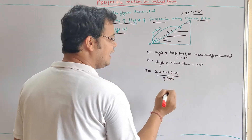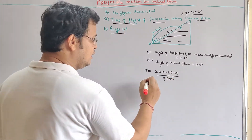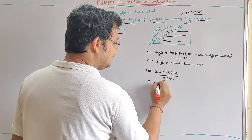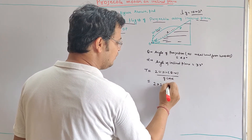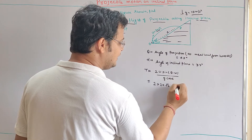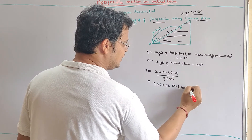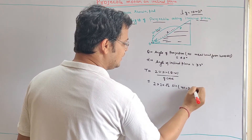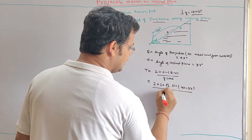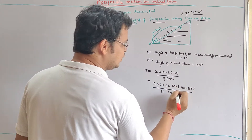This is the time of flight. So, time of flight is equal to this value. Here u is 20 root 2, the angle of projection is 45 degrees, and the angle of incline is 37 degrees, with g equal to 10 and cos 37 degrees in the denominator.